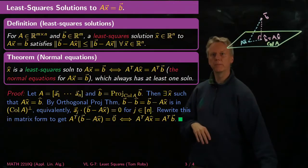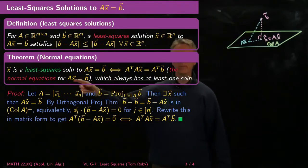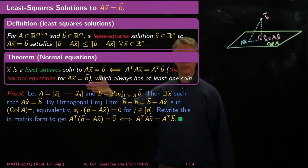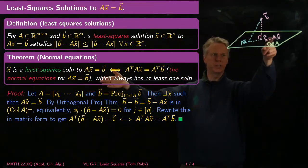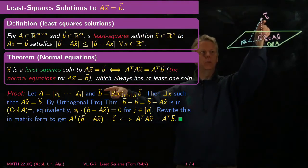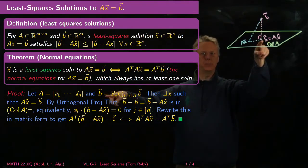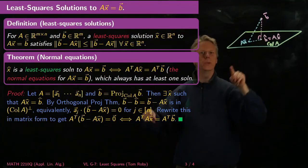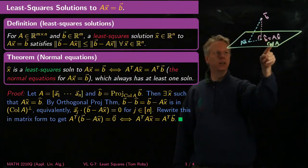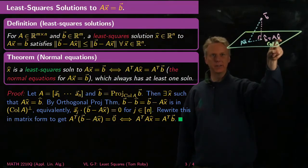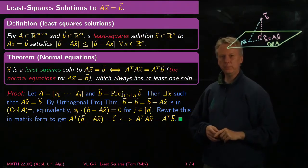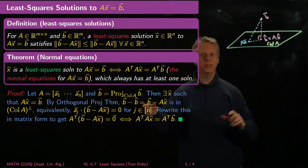So how do we prove this? Well, let's write our matrix A as a string of columns [a1 ... an]. The column space is just the set of all linear combinations of these columns. Now we'll take B and we'll project it down to B hat. So B hat is the projection of B onto its column space. Now, because this is in the column space, there has to exist an X hat somewhere in R^n so that AX hat is equal to B hat, this projection.